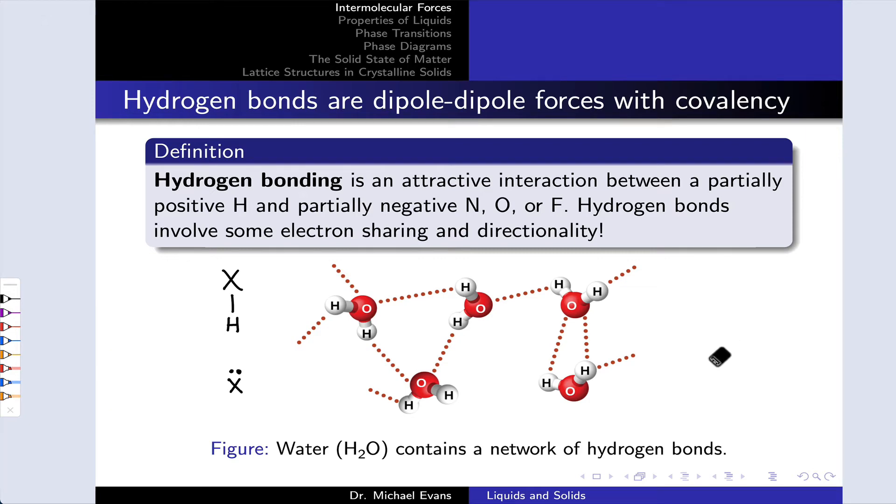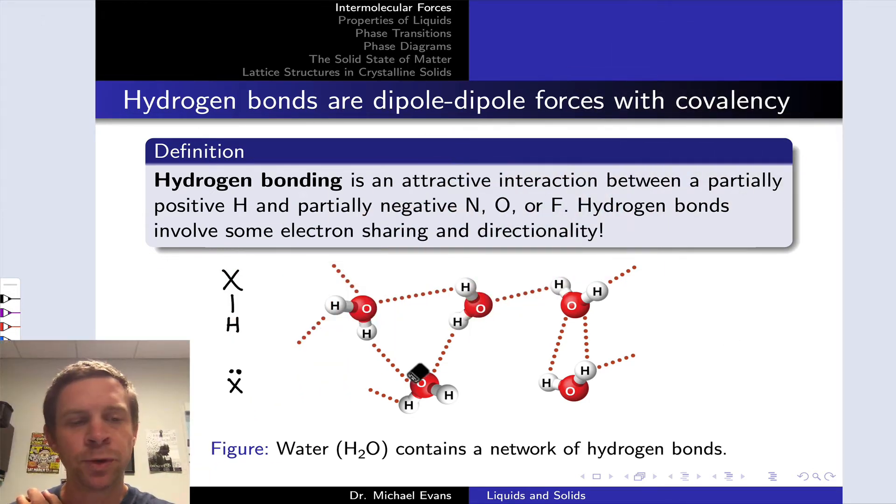Now one type of dipole-dipole interaction we might envision is between a partially positive hydrogen atom connected to a relatively electronegative atom X, something like nitrogen, oxygen, or fluorine, and a nearby nitrogen, oxygen, or fluorine atom that is partially negative.